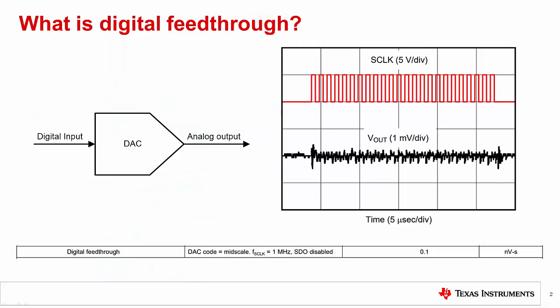First, let's answer the question: what is digital feed-through? Essentially, digital feed-through is when a digital input to a Precision DAC causes undesired glitches on the output of the DAC. For example, this plot is from the DAC80508. We can see that the SCLK signal on the SPI bus causes spurs or glitches on the output. Some devices have digital feed-through specified in the electrical characteristics table. Some digital feed-through is unavoidable as it is caused by elements inside the IC design itself, but a majority of digital feed-through sources are external and controllable.